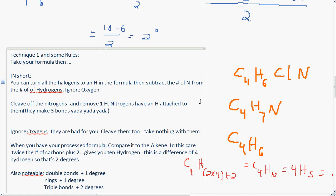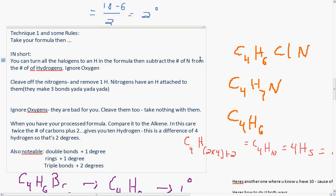Here's how to do it with technique one and some rules. You take your formula, then, now in short, you can turn all of your halogens into a hydrogen in the formula and then subtract the number of nitrogens from that number of hydrogens. If you have an oxygen, just ignore it. Dealing with your hydrogens, you cleave off, well, dealing with your nitrogens. You cleave off the nitrogen and remove one hydrogen with it. Nitrogens have a hydrogen attached to them, they make three bonds.